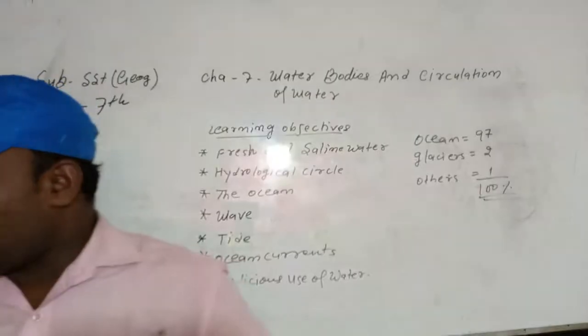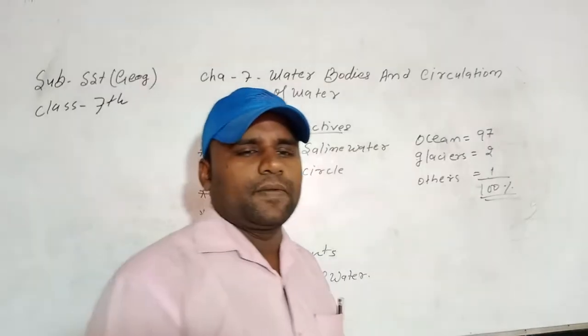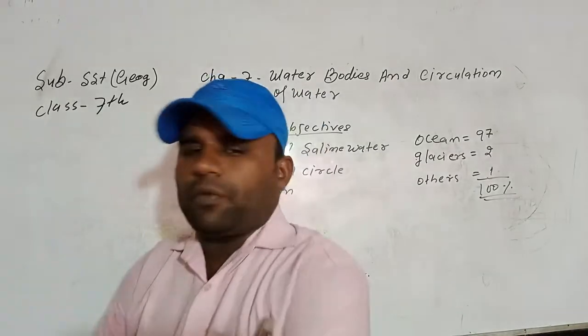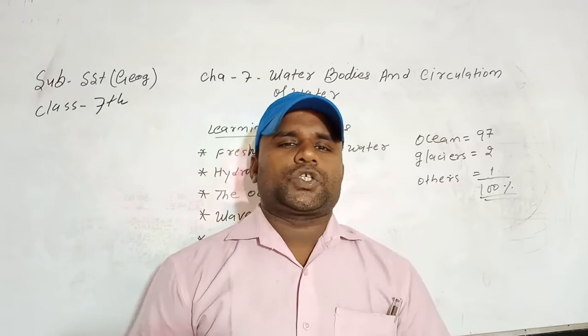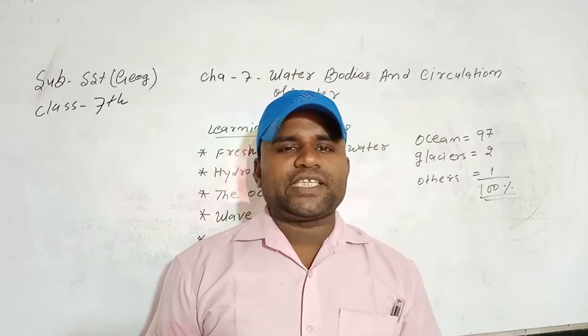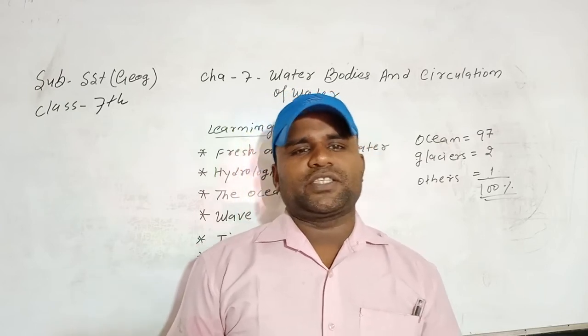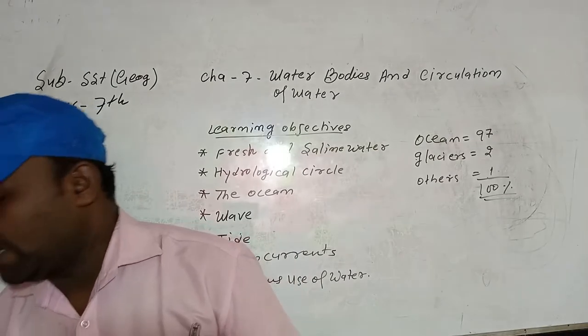Next is the ocean. You know, ocean is the principal component of our hydrosphere. There are 5 oceans. Okay, and you know better, ocean is the largest water bodies in the world. The total number of oceans in the world are 5.